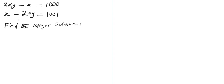Hello viewers, we have this problem to solve. We have 2xy minus a equals 1000 and x minus 2ay equals 1001, and we are asked to find the integer solutions.